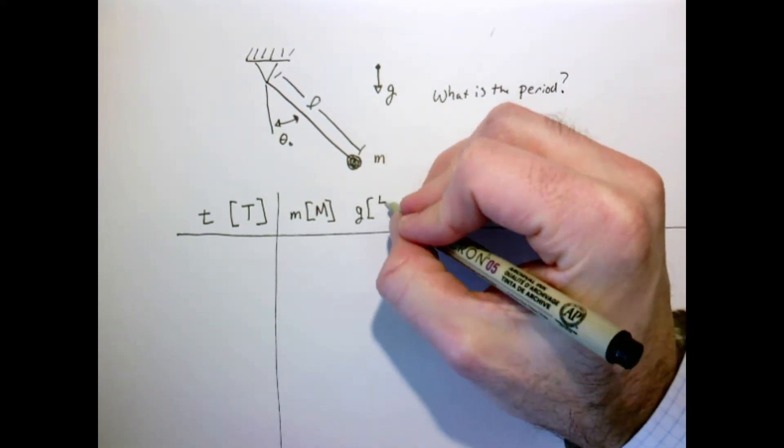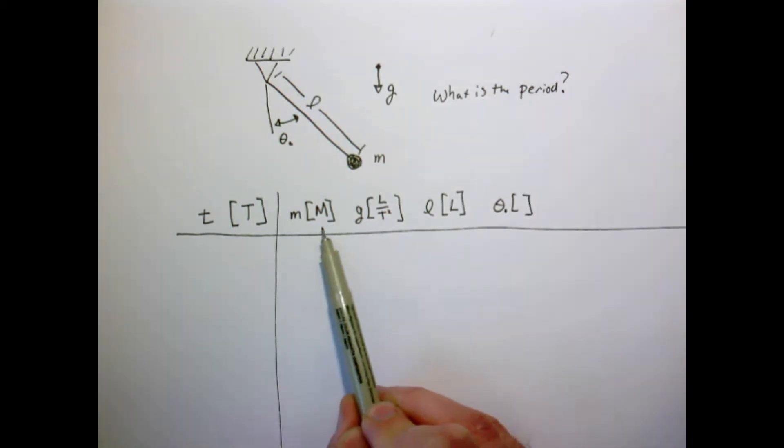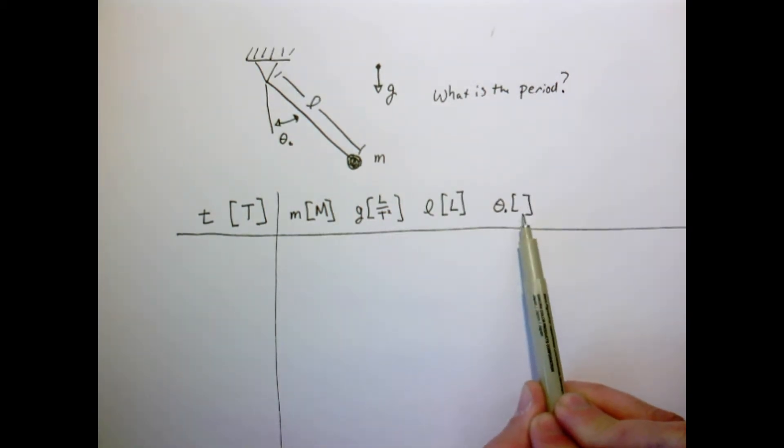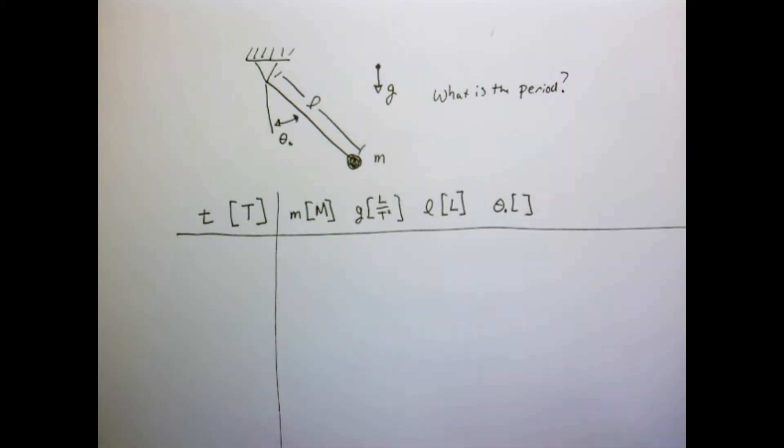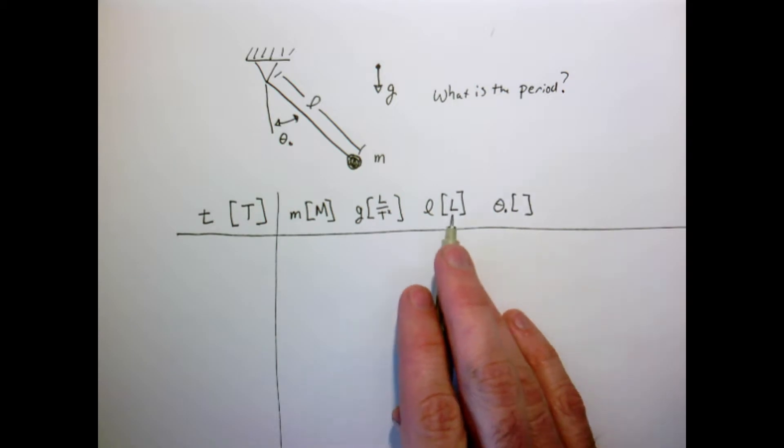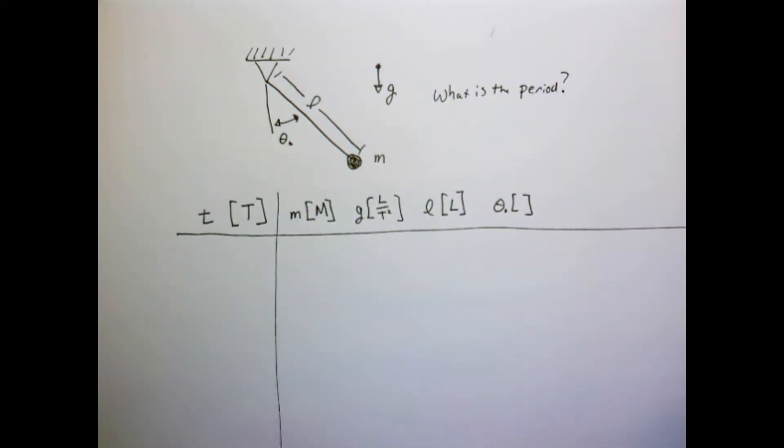So the way I'm going to proceed using dimensional analysis is I'm going to write out all the parameters in the problem. I'm going to start with a thing that we want to know, so the period. So I'm going to denote that as the time that it takes to complete one swing, having units of T. So I'm going to write out a little table. So here's the thing we want to know, then I'm going to list all the parameters that the problem depends upon, and their units.